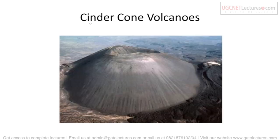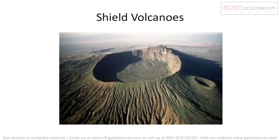The next is cinder cone volcanoes. Their shape is somewhat like an ice cream cone. When they erupt, they make a very loud noise that can be heard several kilometers away. Next are shield volcanoes — 'shield' means dhaal (shield). Looking at them from above, the mouth looks like a shield. The lava in shield volcanoes is very thin and flows very easily, spreading out over a great distance because the mouth is very wide.